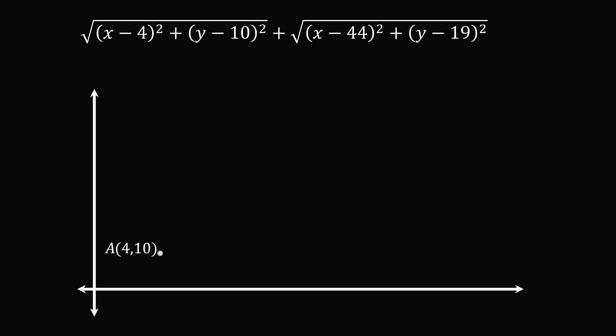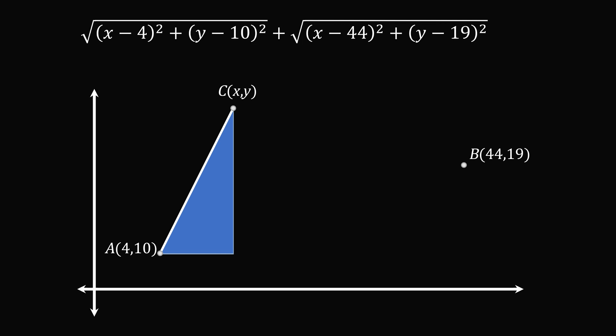Let A be the point (4, 10), and B be the point (44, 19). Let C be the point (x, y). We can construct AC, then construct a right triangle where one leg is the distance between x and 4, and the other leg is the distance between y and 10. The hypotenuse is the length of AC, equal to the square root of the sum of the squares of the legs. Thus, the first square root exactly corresponds to the length of AC.